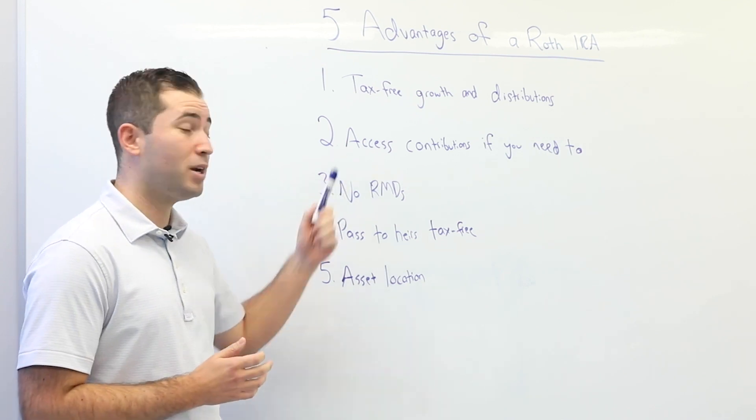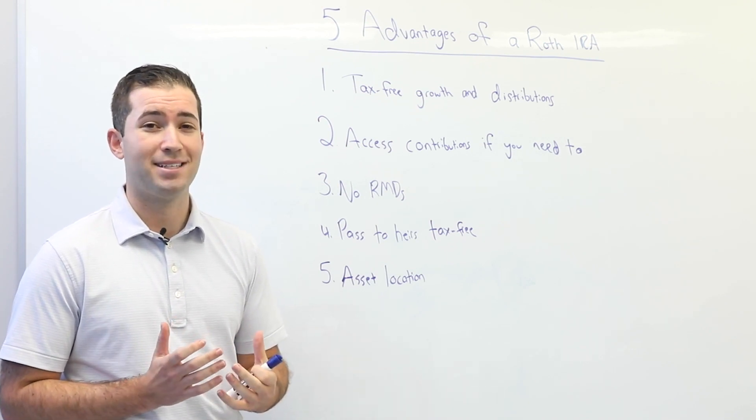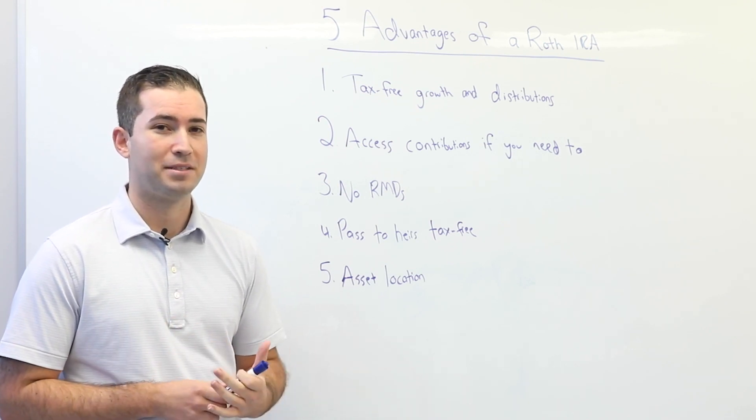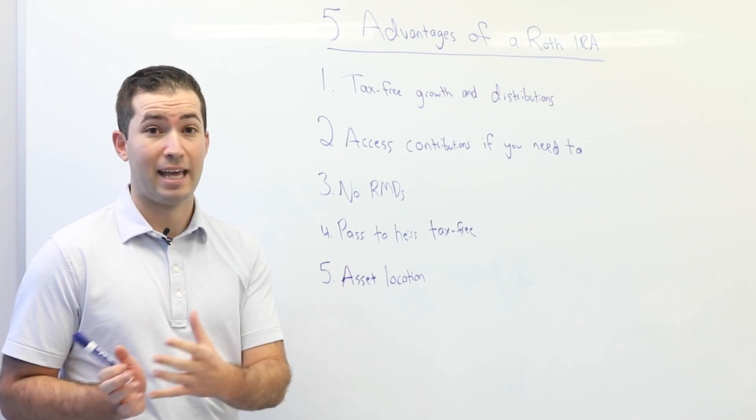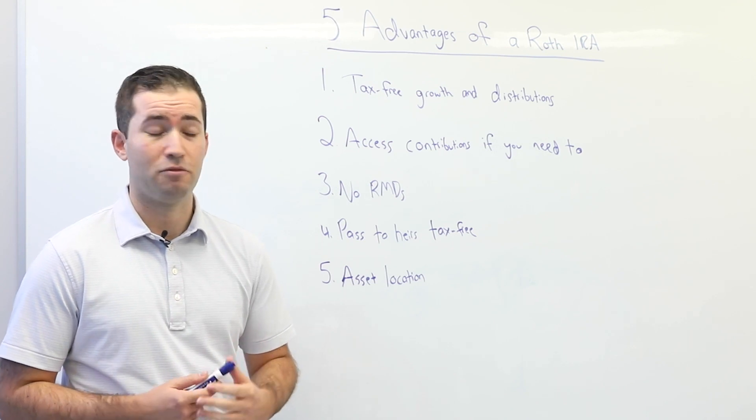Whereas with a Roth IRA, if you wanted to access your contributions whenever you needed to, you could take out your basis tax and penalty-free. Basis meaning the money that you have personally contributed, not counting growth. You could take that out tax and penalty-free at any time and for any reason.